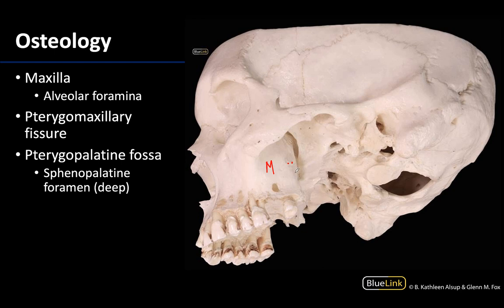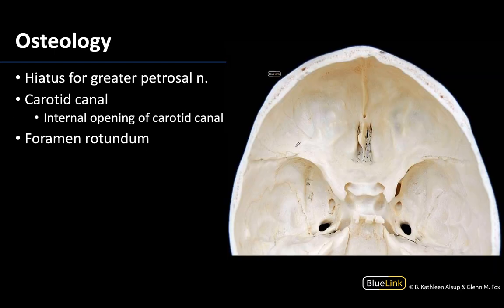Now, one of my all-time favorites — let's identify the pterygomaxillary fissure. What I have outlined is the pterygomaxillary fissure; it is going to be a relatively wide fissure between the pterygoid process and the posterior maxilla. As you move medially into that darker space, you are entering the pterygopalatine fossa. What is not visible here but deep within is the sphenopalatine foramen, the opening that leads into the nasal cavity. So you can go from the pterygomaxillary fissure into the pterygopalatine fossa, and on the deeper wall you'll have the sphenopalatine foramen.